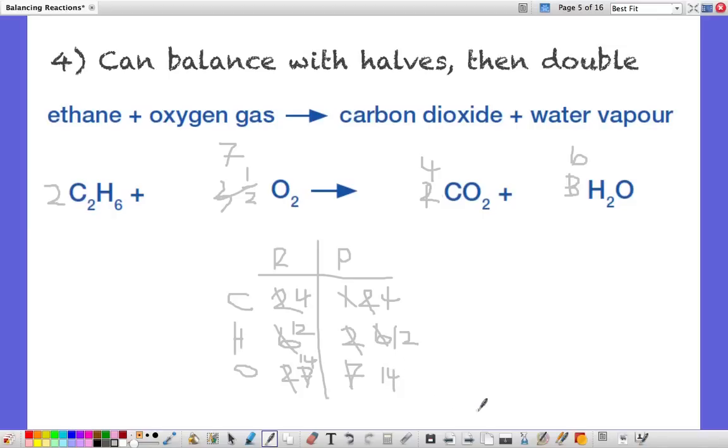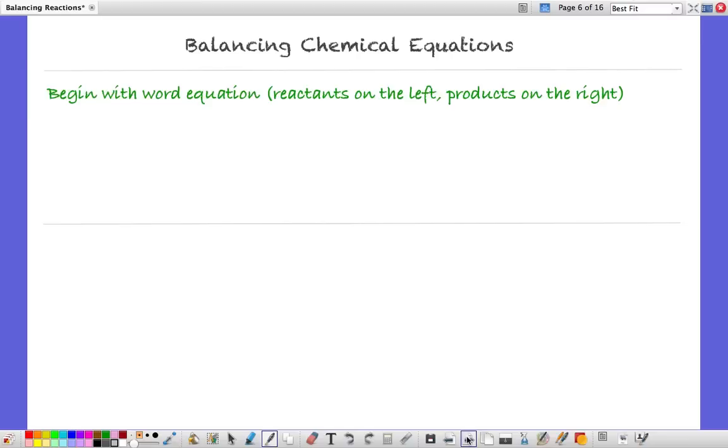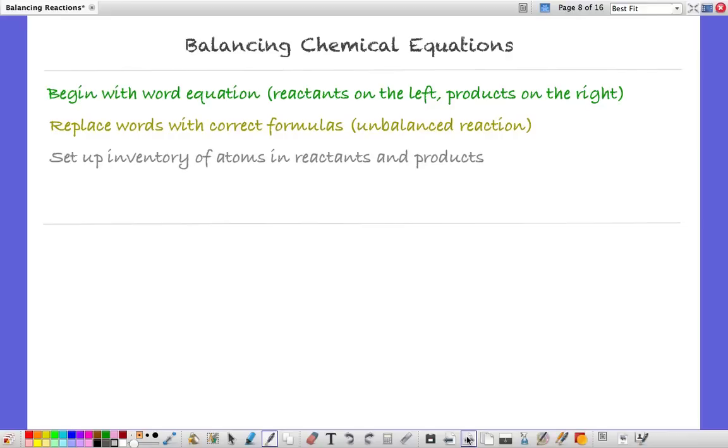So there are all the tricks. I'll just summarize them briefly. If you're balancing chemical equations, you begin with the word equation, reactants left, products on the right. You convert that to a formula equation, which is initially unbalanced. Correct formulas are very important, otherwise nothing will work. The first thing is to set up an inventory of atoms with columns for reactants and products. I would advise using a pencil and eraser because you will need to change things as you go. It's just a back and forth kind of process.